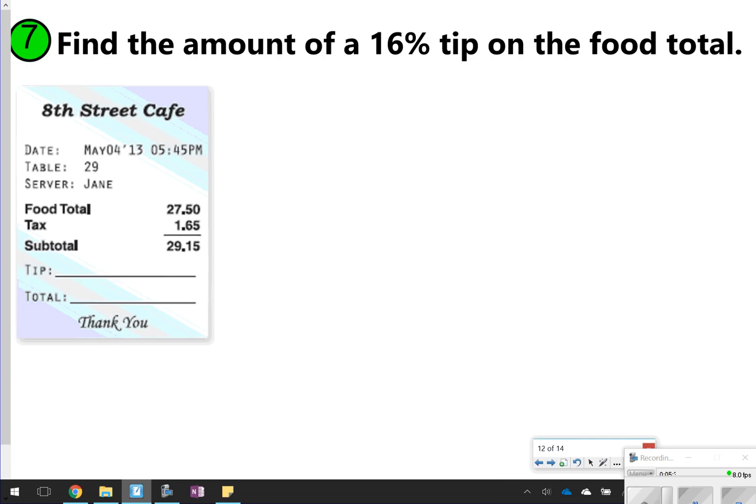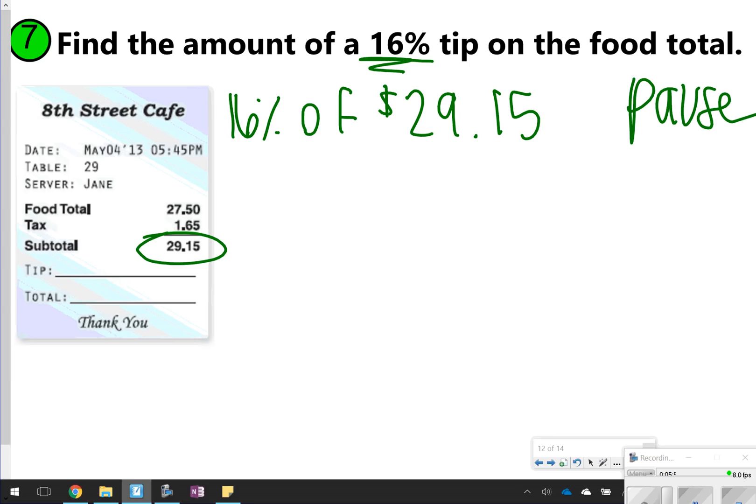The last one you're going to try on your own. This one's a word problem. It says find the amount of a 16% tip on the food total. Here's your total price, and we're trying to find 16% of 29.15. 16% of $29.15. Go ahead and pause right now to see if you can find the tip, and then use that tip to also find the total.